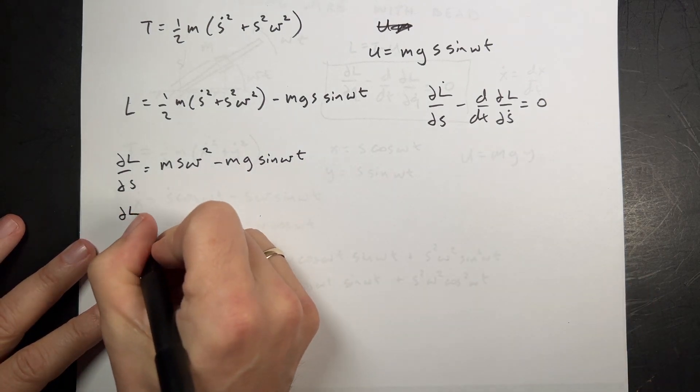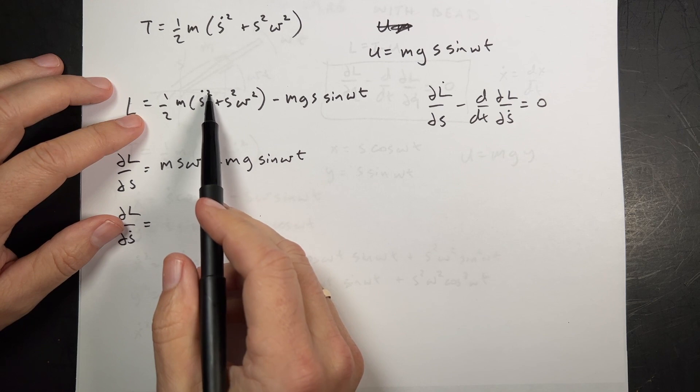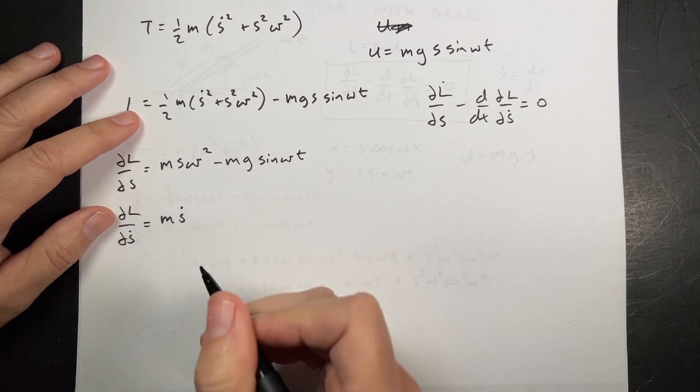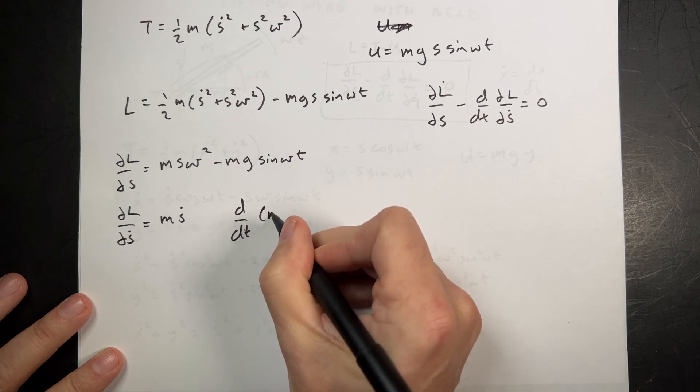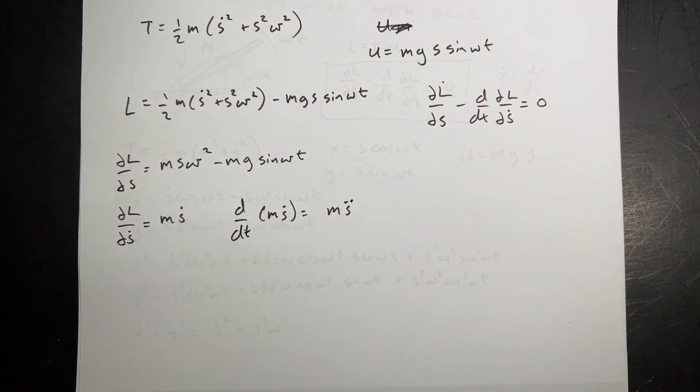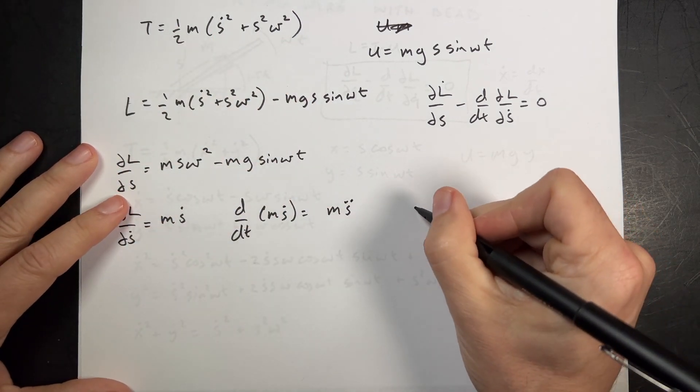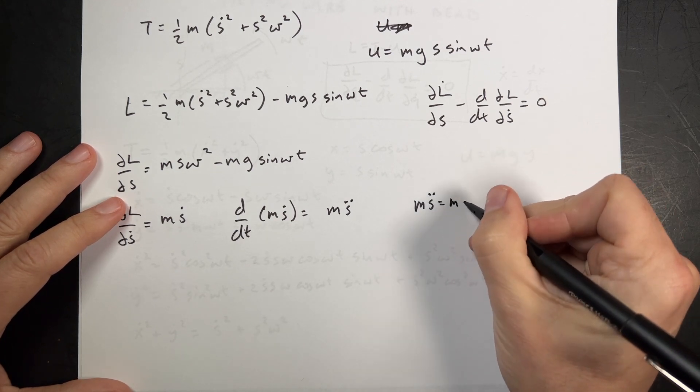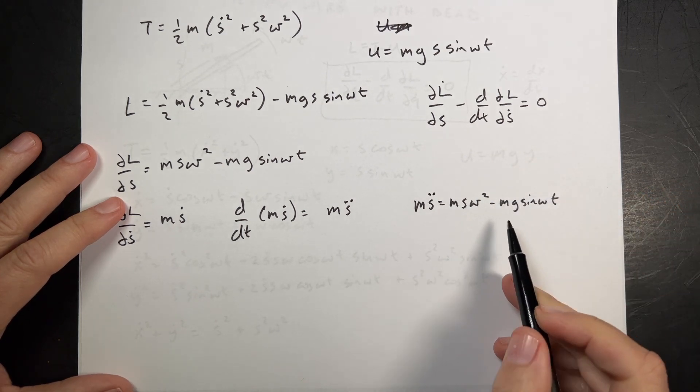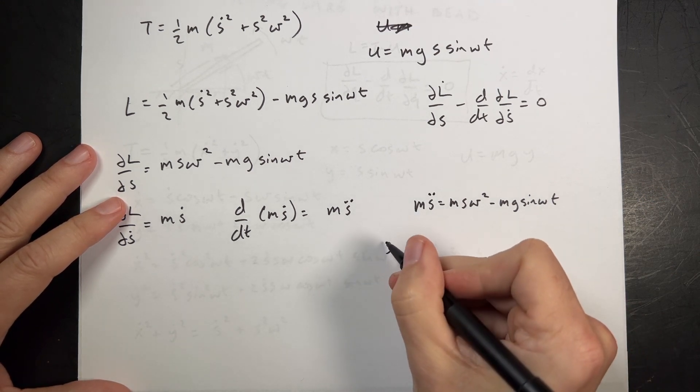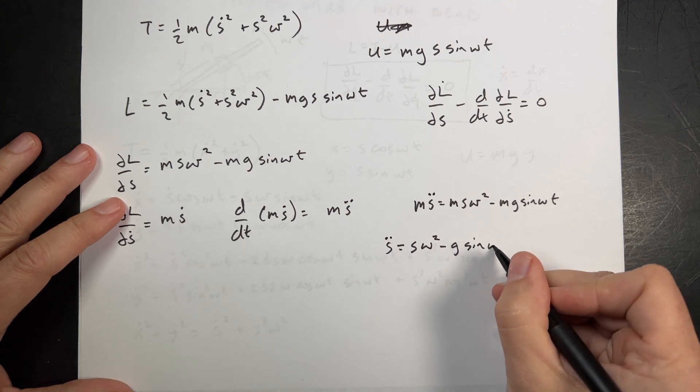Now I can do the Euler Lagrangian equation. I only have one variable. So I only have one equation. I'm going to write it over here. Partial of L with respect to s minus the time derivative of the partial of L with respect to s dot is equal to zero. So let's do this first part. The partial of L with respect to s. So I'm looking through here and finding where are s terms. There's one right there. So I have one half m s squared omega squared. And it's just the partial with respect to s. So I can treat everything else as constant. It is constant anyway. So I can just use the power rule. I bring the two down and I get two over two, which is one. So I get m s omega squared. Any other s terms? One right there. So again, it's just a power rule. So I just get minus mg sine omega t.